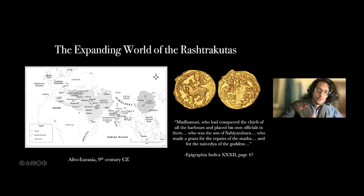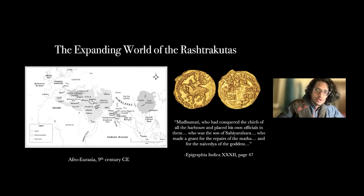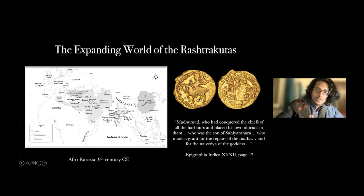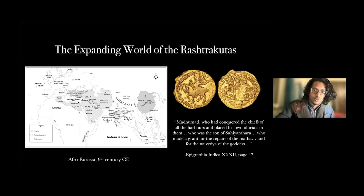Coming back to the coin of the Rashtrakuta Emperor Govinda III: it's a gold coin depicting him sitting on a horse, using pseudo-Arabic script. Why? Simply put, the Rashtrakutas imported horses from the Arabian Peninsula for use in their wars. What Govinda is doing with this coin is depicting himself as a modern, world-facing, globalized monarch — using the Arab script and riding the premier object of the global arms trade at the time: the Arab war horse.